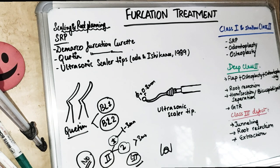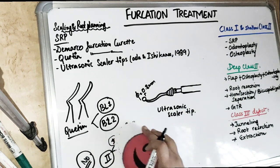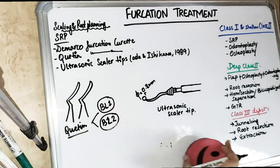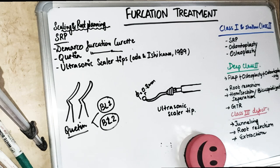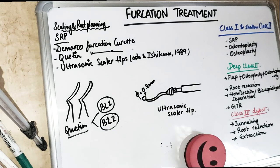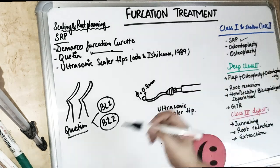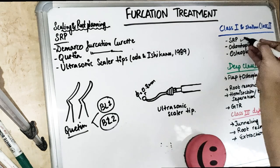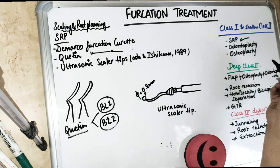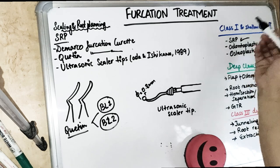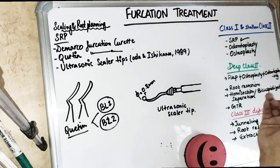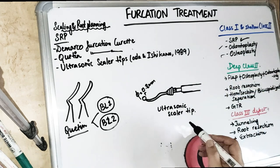Today's video we are going to talk about furcation treatment. Grade 1 furcation is very slight — just an incipient lesion — so it can be treated with scaling and root planing. For Grade 1 and shallow Grade 2, we can also do odontoplasty and osteoplasty.